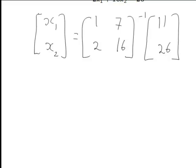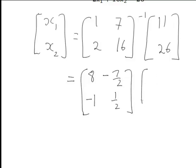So returning to what we are solving for which was X equal to A inverse B. Putting in the values of the inverse matrix we just worked out. That will be multiplied by the column vector 11, 26.